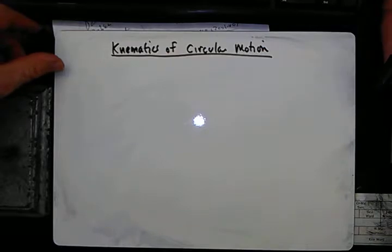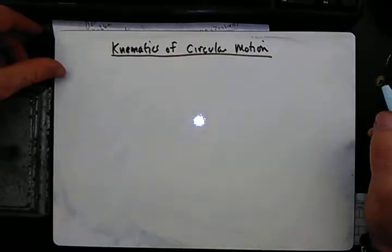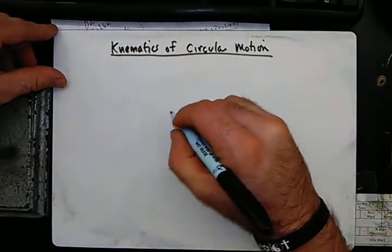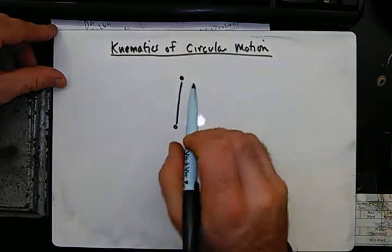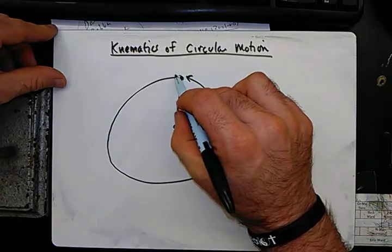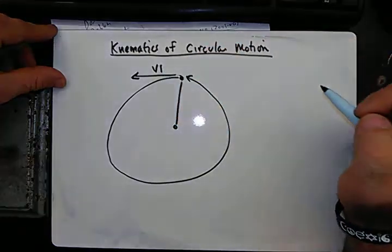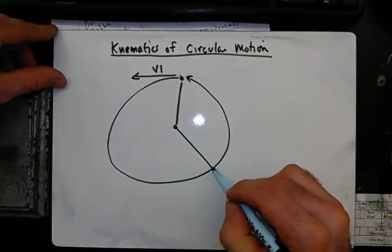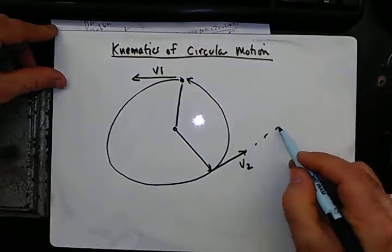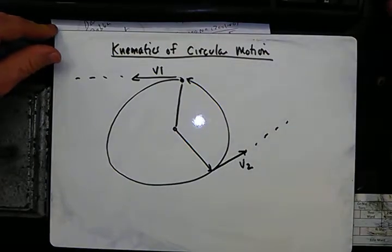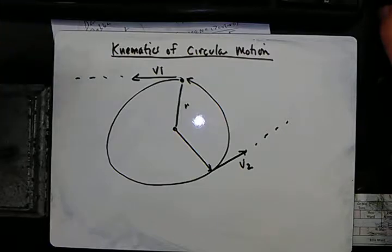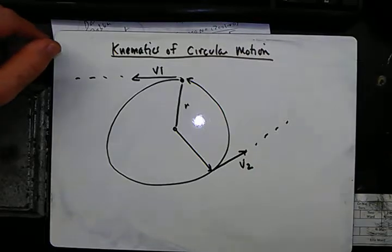An object in uniform circular motion moves in a circle at a constant radius and constant speed. If something is swung around a circle, the velocity at one point is headed in one direction, and as it swings around the velocity is headed in a completely different direction. The direction of velocity is always changing, but the radius stays the same, and so the time to travel around the circle stays the same.